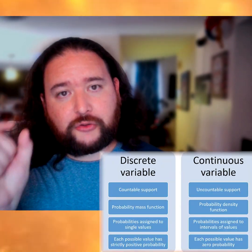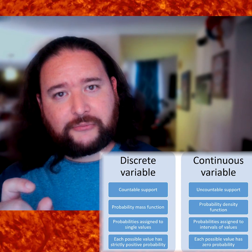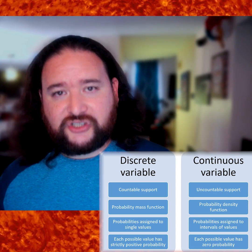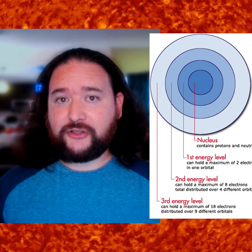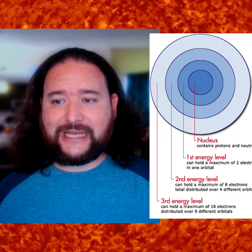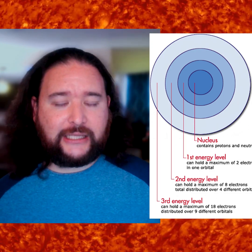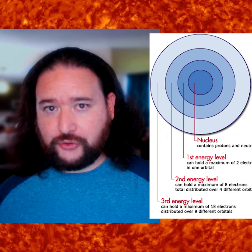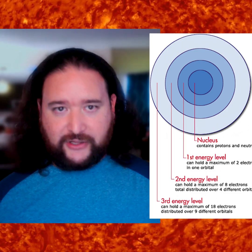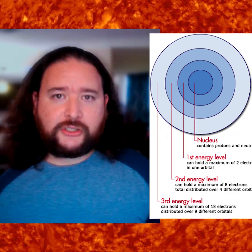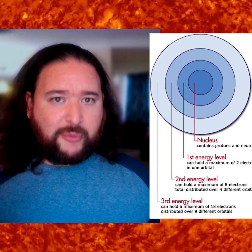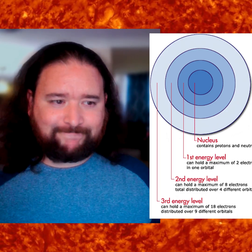Time is not discrete — it's continuous, because you can have infinitely smaller units of time; you can always talk about a smaller fraction of a second. In quantum you don't get that. An electron around a nucleus can only be in energy level 1 or 2, never anything between. So quantum is discrete and probabilistic.